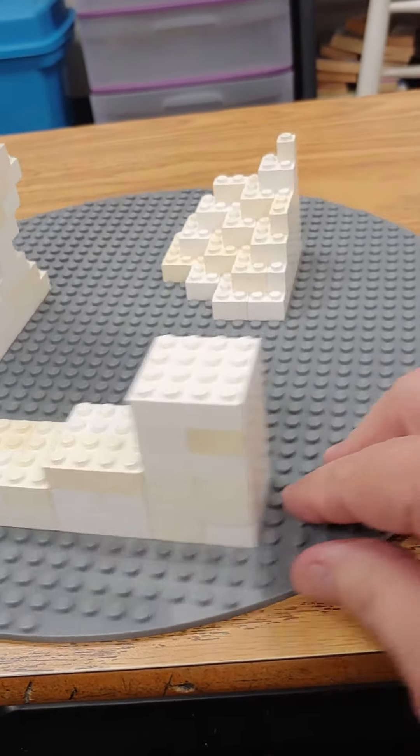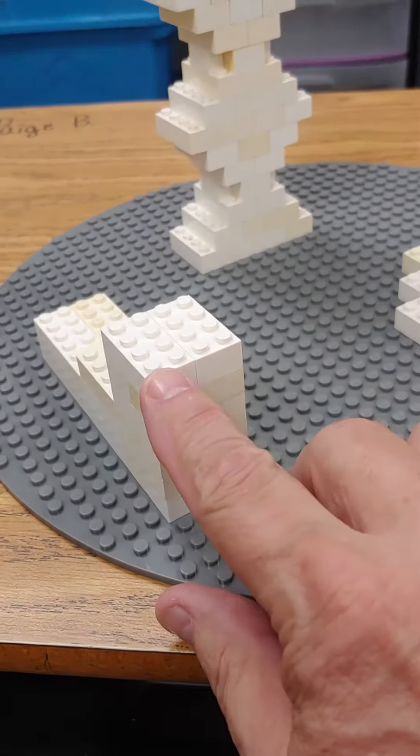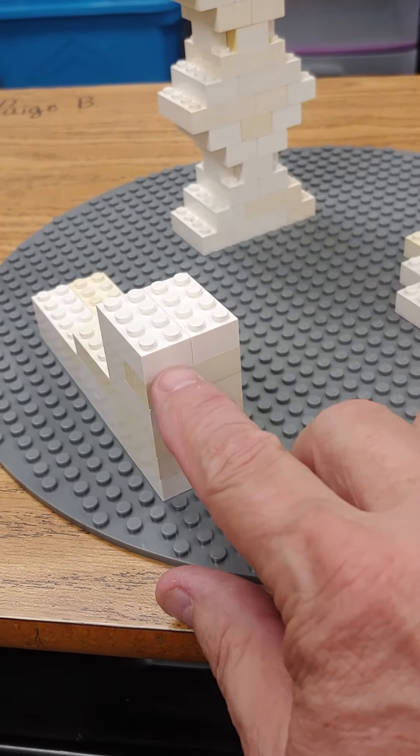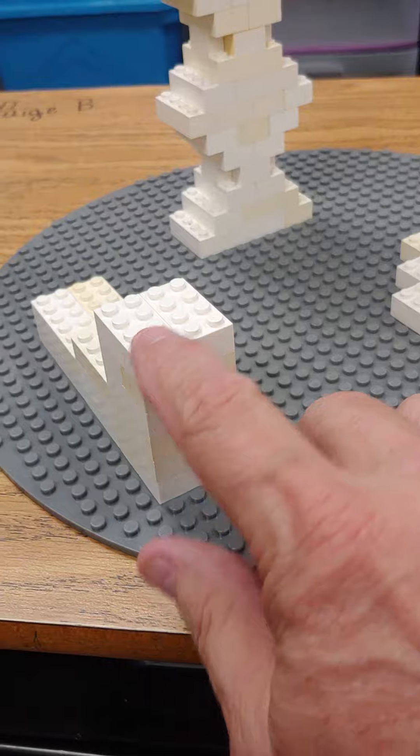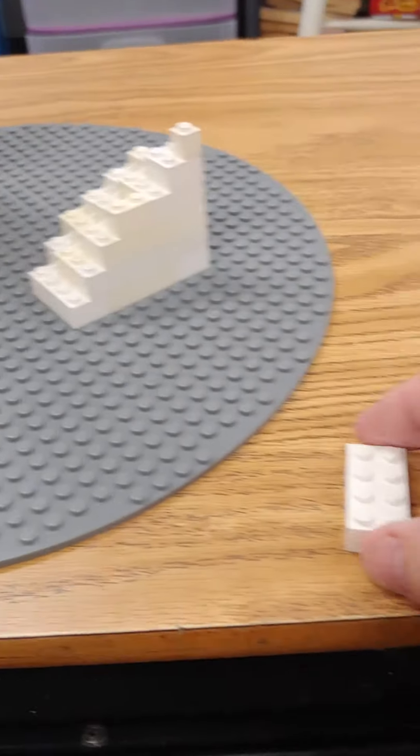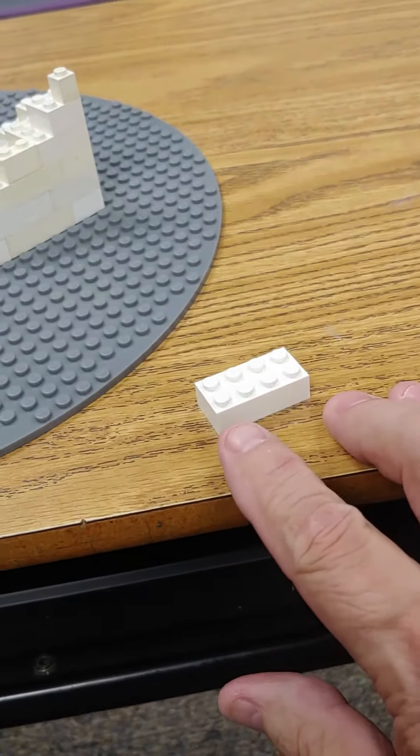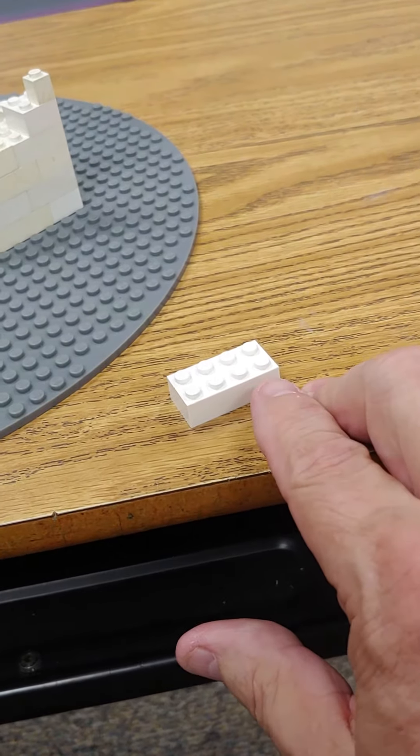For this one here, if we're going to do the Lego unit, this is going to count as one tall, so one unit. This 2x4 brick would be eight Lego units.